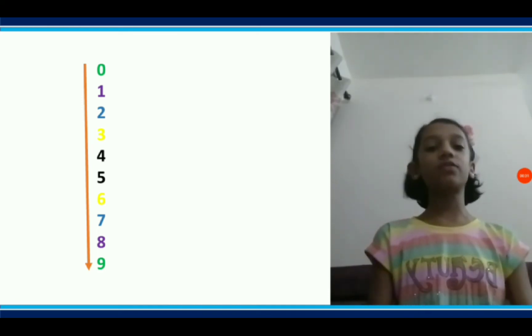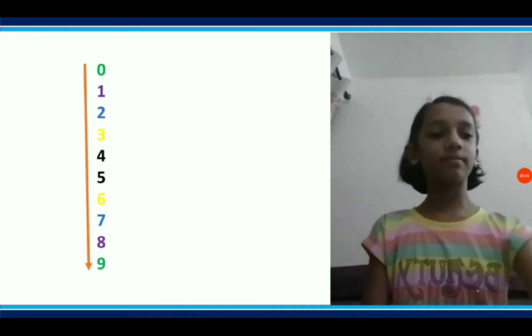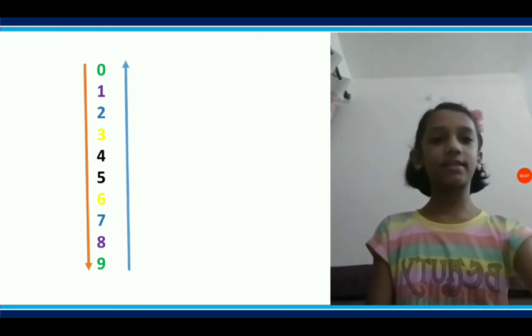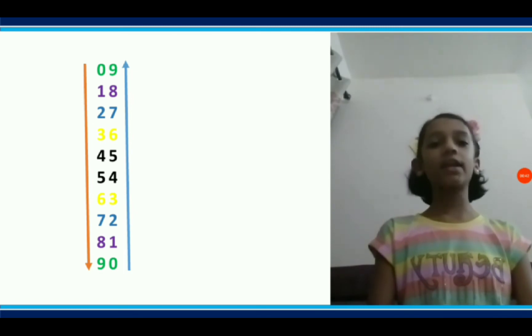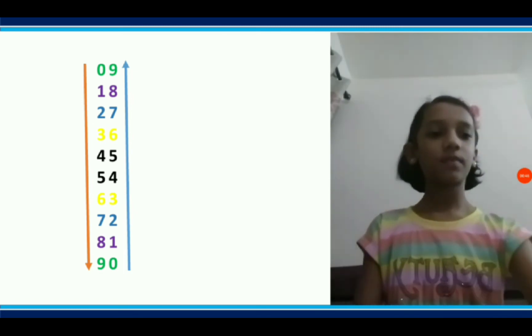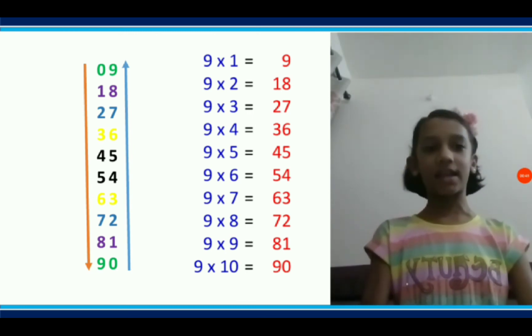Now at 1st place we will write 9 to 0, reverse of 0 to 9 like this: 9, 8, 7, 6, 5, 4, 3, 2, 1, 0. Now our 9 times table is ready.